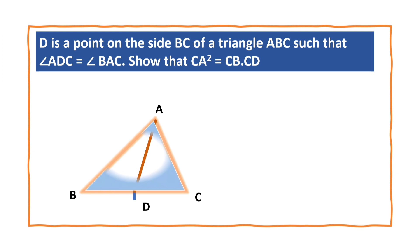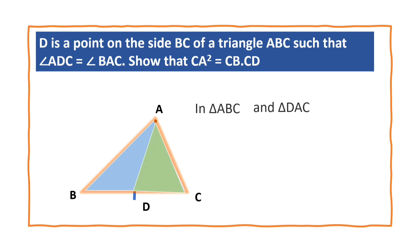In triangle ABC and in triangle ADC, we have angle A in ABC, that is angle BAC, equal to angle D, that is angle ADC. This is given.